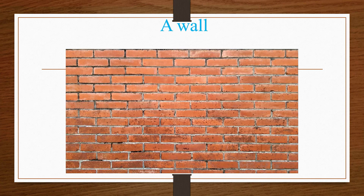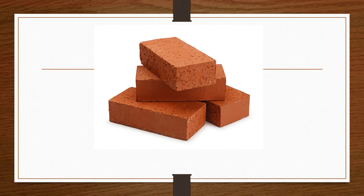Children, have you ever wondered what a house is made of? A house is made of walls, right? The walls help the house to stand upright. But what are walls made of? Walls are made of bricks. So the brick is the smallest unit of a house. Just like the house, our body is also made up of smaller parts.